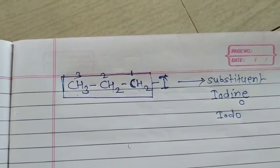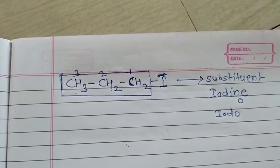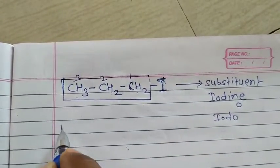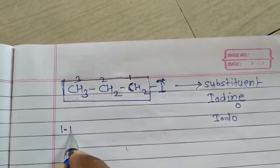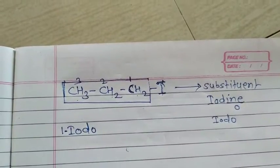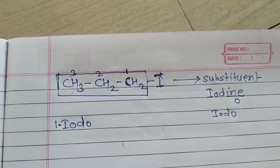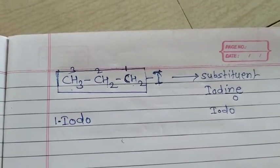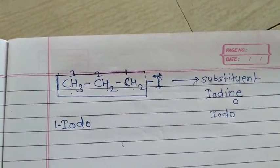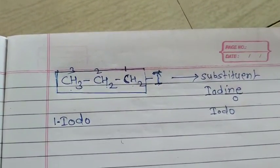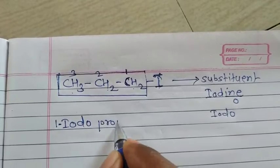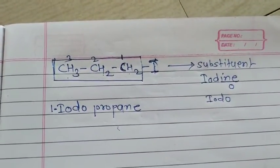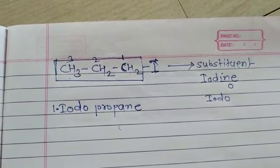Write the name of the substituent with its proper number. The iodo group is present at the first position, so it is written as 1-iodo. Then, write the name of the alkane from the selected carbon chain. In this example, three carbon atoms are selected, so the alkane is propane. Therefore, the IUPAC name is 1-iodopropane.